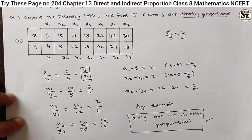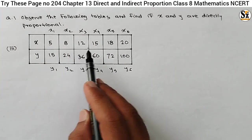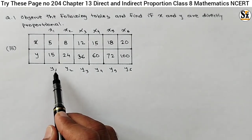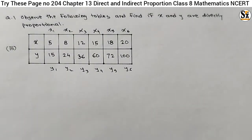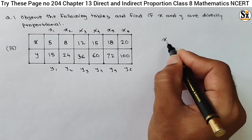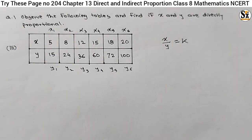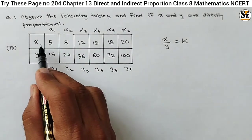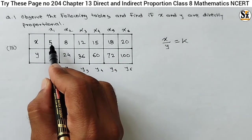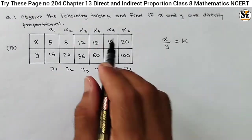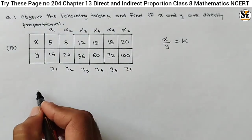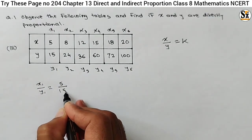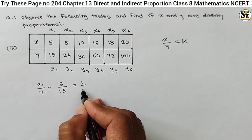Now see the last table of this question. In this table, values of x and y — let's write x1, x2, x3, x4, x5, x6 and corresponding values y1, y2, y3, y4, y5, y6. What is our basic condition? The ratio of x to y must be constant for a positive value at different stages. The value of y increases, and the value of x also increases. So let's try to find the ratio. First is x1 upon y1: x1 is 5 and y1 is 50. The ratio will be 1 upon 3.